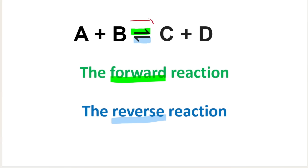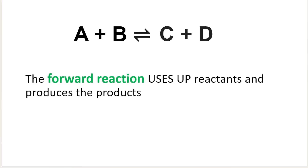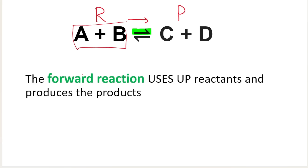You can see that this points forward. So when we say forward, think off to the right, and this points in the reverse direction or to the left. This is very important to understand: the forward reaction uses up reactants and produces products. These are my reactants and these are my products. So A and B are used up and C plus D are produced — the products.